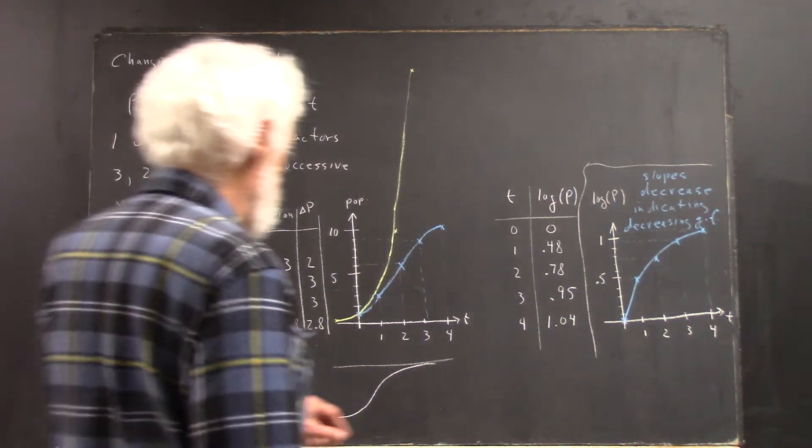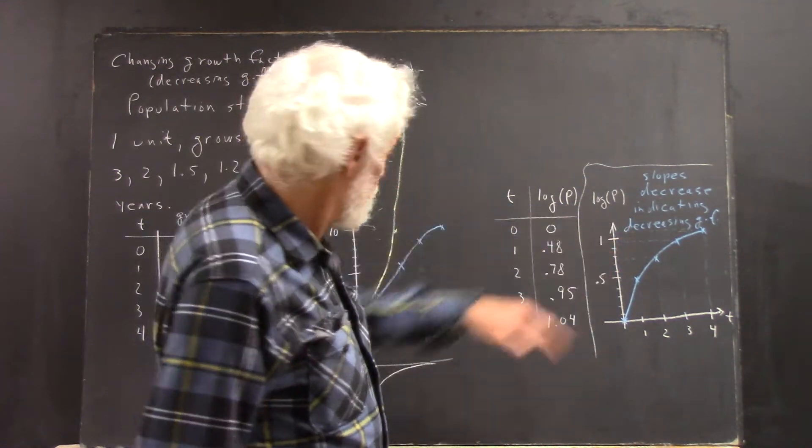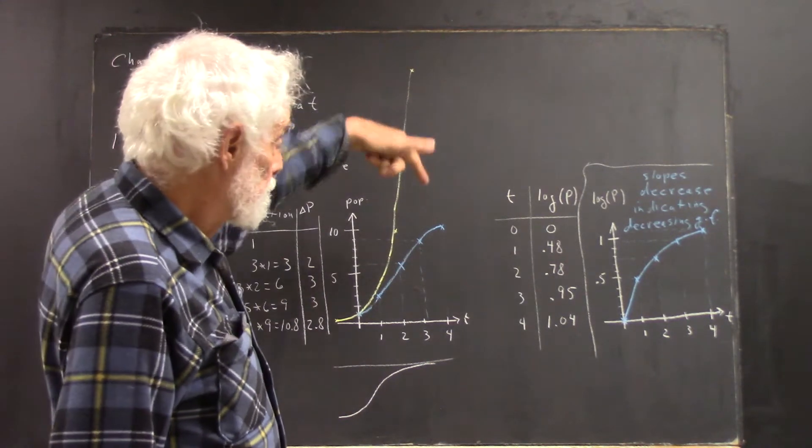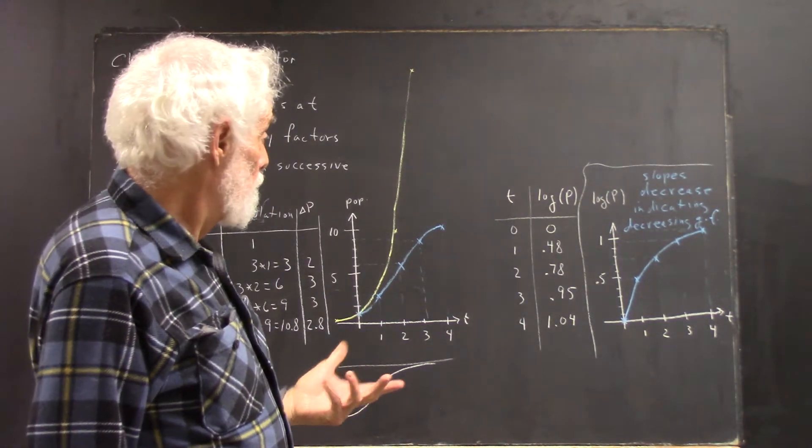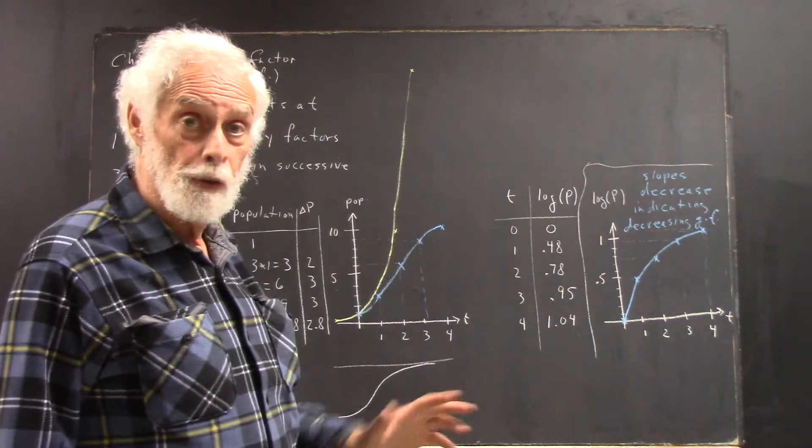Now, as we've seen in previous videos, the log of an exponential, the log of this exponential versus t, or the log of a population versus t, in the case of exponential growth, is a straight line.